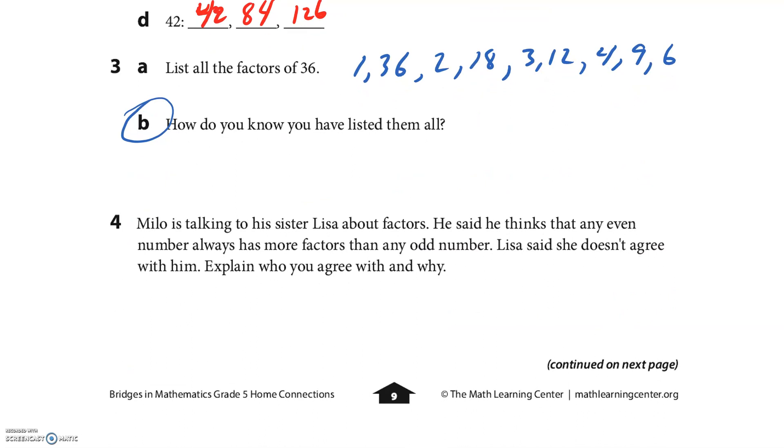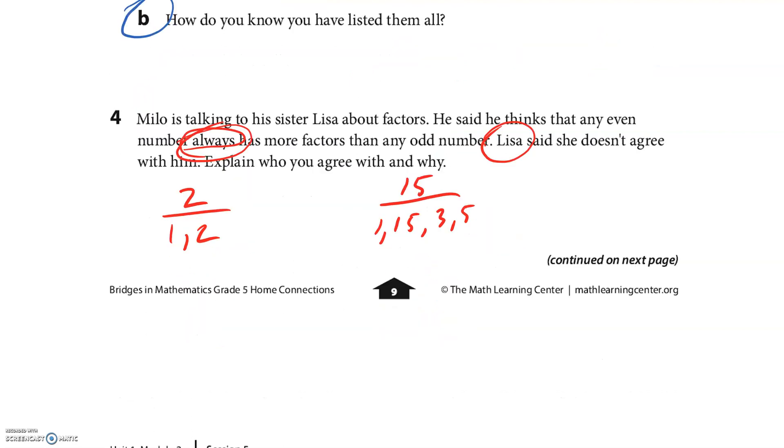While you're checking that, I'll go to number 4. Milo is talking to his sister Lisa about factors. He thinks that any even number - always - has more factors than any odd number. Be careful when you use 'always.' Lisa doesn't agree. So I'll go with the simplest even number: 2. The factors of 2 are 1 and 2. He said always, right? What if we used 15? 1 times 15 and 3 times 5. I agree with Lisa - it's not always true. There are other ones we could try, but that proves our point. When he says always, that gives it away. Next page.